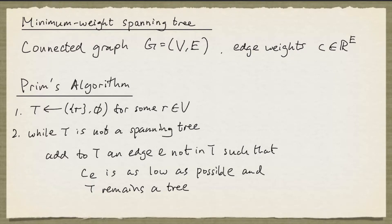We're going to look at two classical algorithms for the minimum weight spanning tree problem. We have a connected graph G and the edge weights are given by C. The problem is to find a spanning tree such that the sum of the weights on the edges in the tree is least possible.